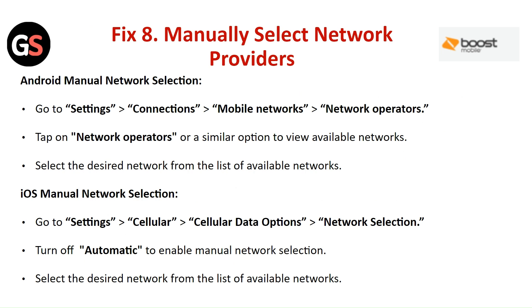Fix Eight: Manually select network providers. For Android manual network selection, go to Settings, then Connections, then Mobile Network, then Network Operators. Tap on Network Operator to view the available networks and select the desired network from the list. For iOS manual network selection, go to Settings, then Cellular, then Cellular Data option. Click on Network Selection and turn off Automatic to enable manual network selection, then select the desired network from the list.